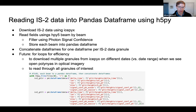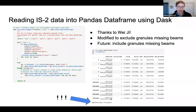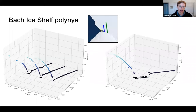I also looked at reading ICESat-2 into a pandas data frame using Dask — thanks to Wei Ji, one of our tutorial leads who posted this code on the help channel. It was really amazing to be able to read so many photons across multiple concatenated granules with lots of data variables of interest. This is some 3D plotting of the Bach ice shelf polinia. From there, we also looked into pulling data into an xarray dataset.